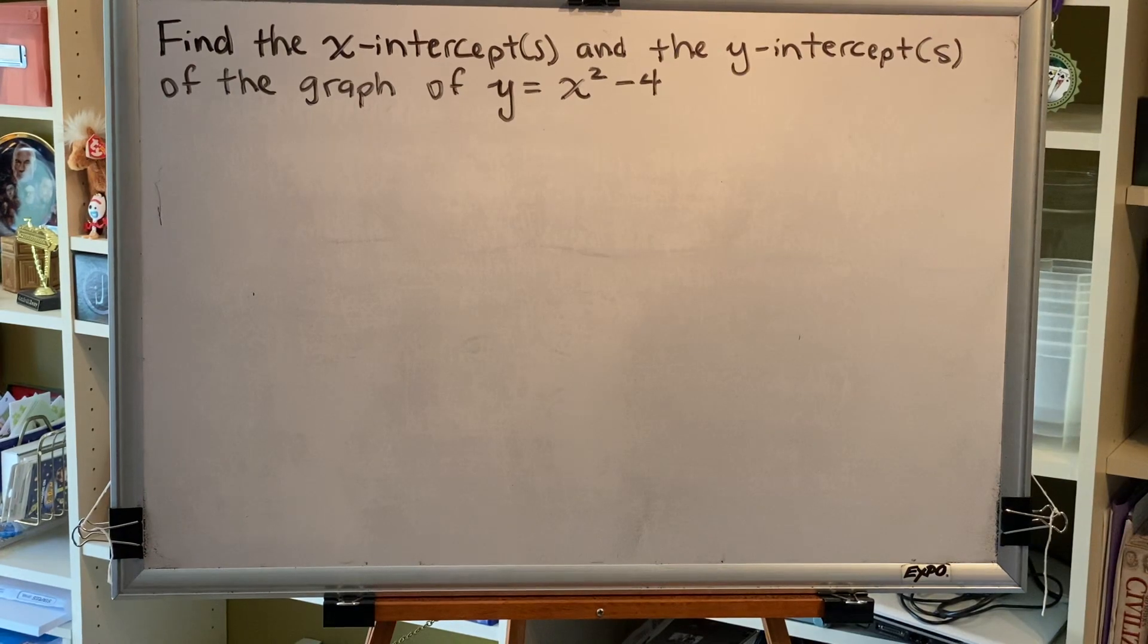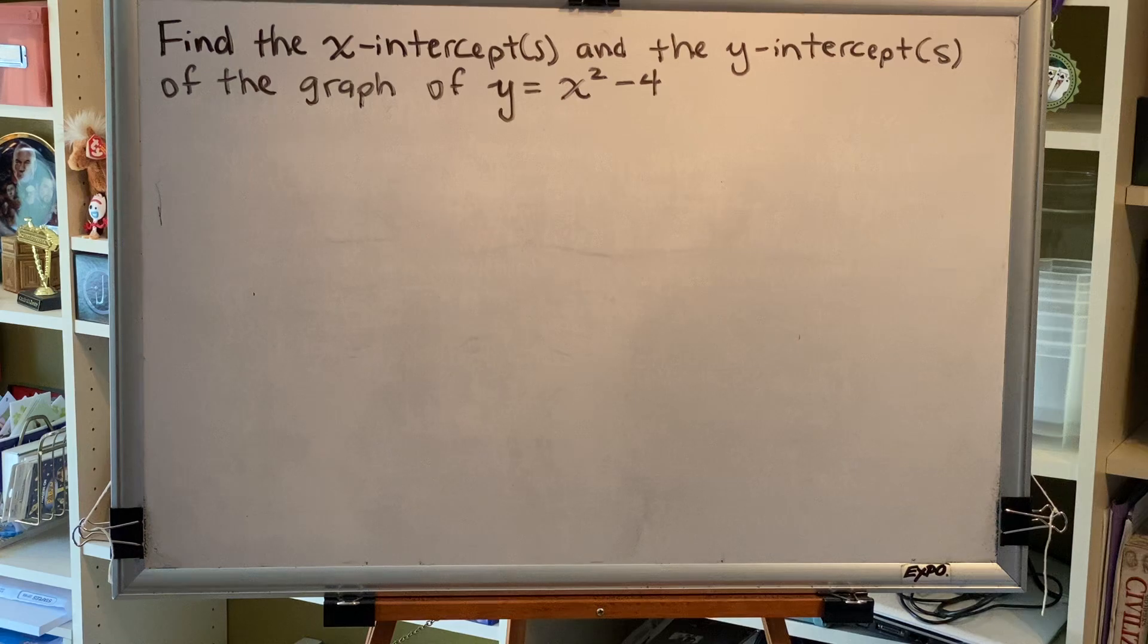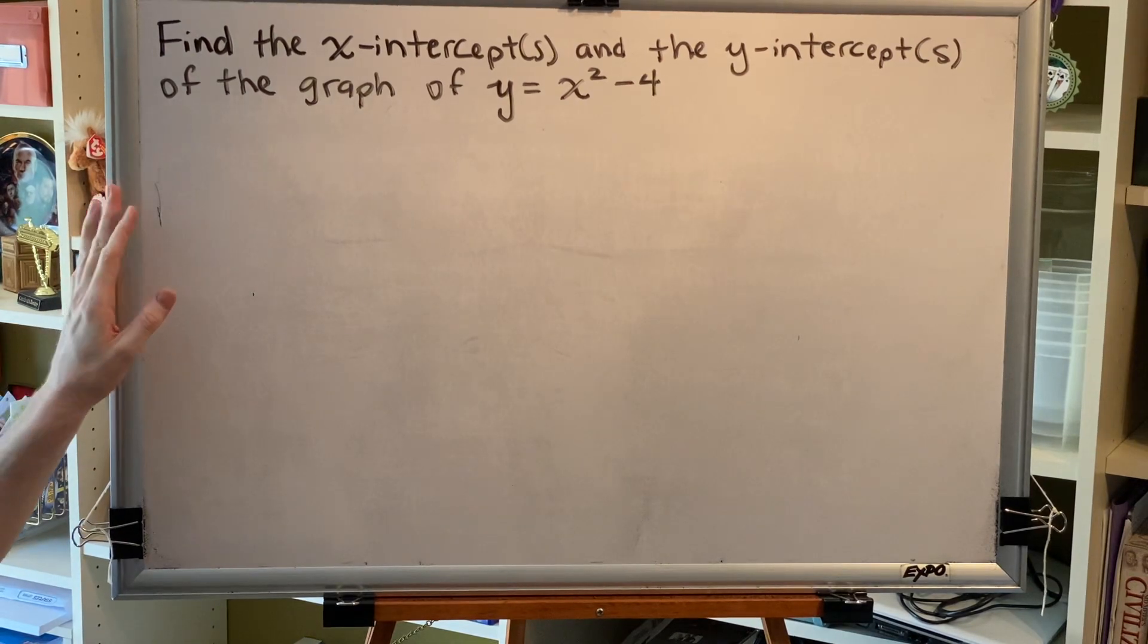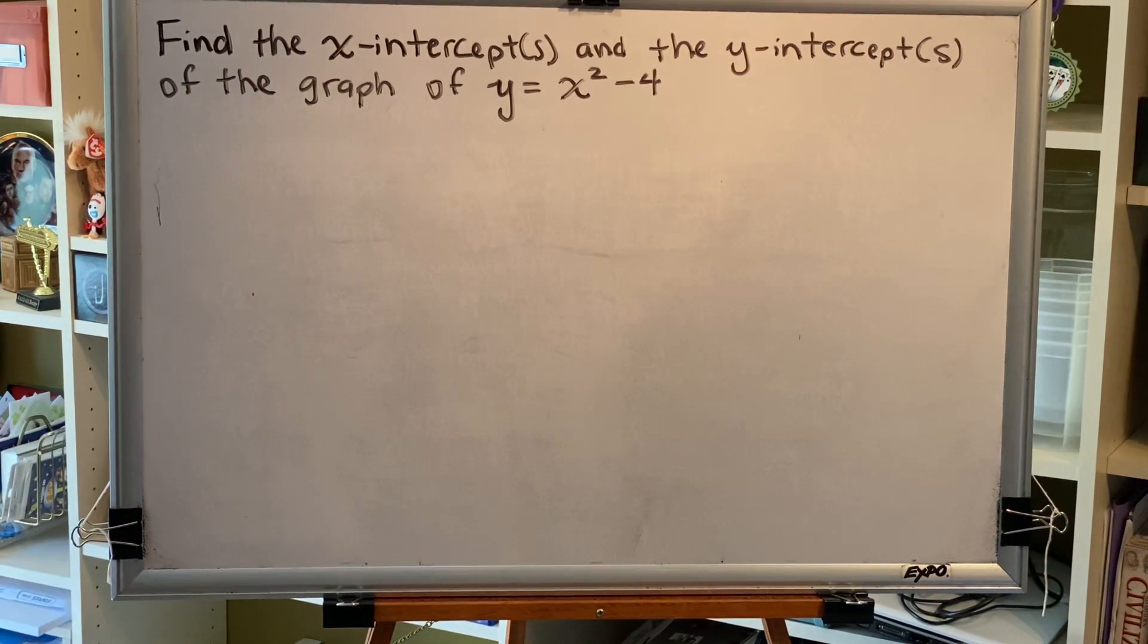Said more succinctly, to find an x-intercept, set y to 0; to find a y-intercept, set x to 0. Here's a problem: Find the x and y-intercepts of the graph of y equals x squared minus 4.